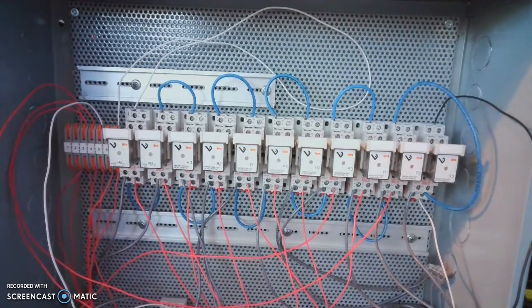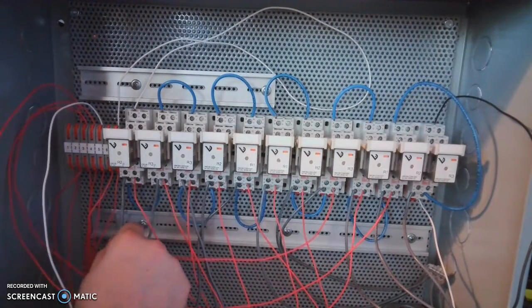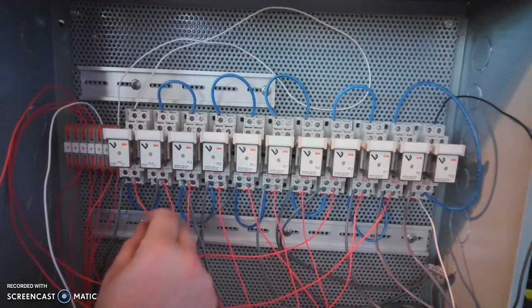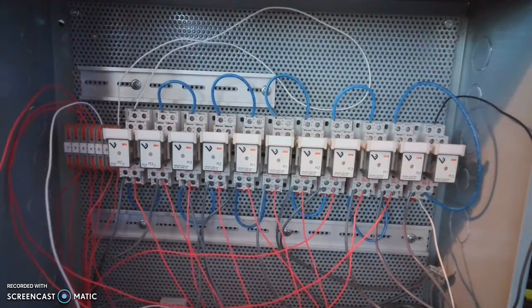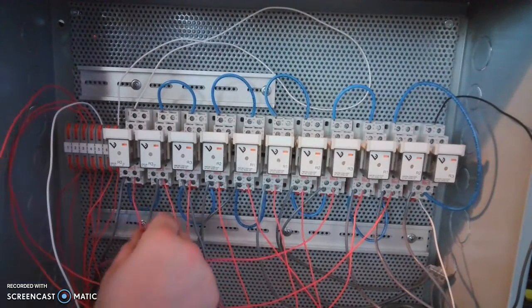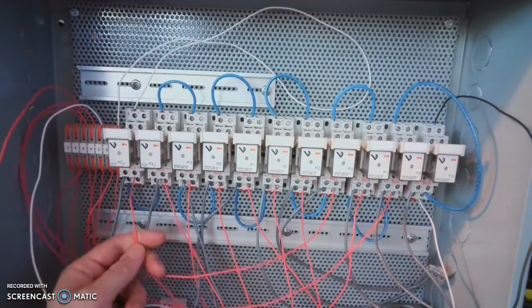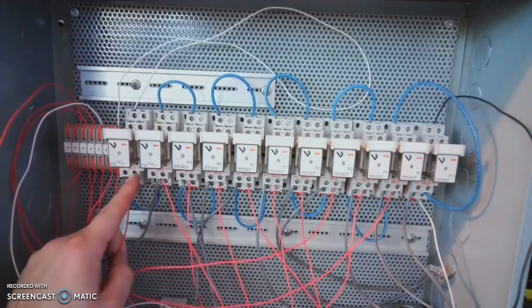How do we wire this? Well, your gray here is going to your common side of your 24 volt transformer. The red here normally would go from your hot side of your transformer through the device, the safety device like the smoke detector, low limit, high limit, and then into here.